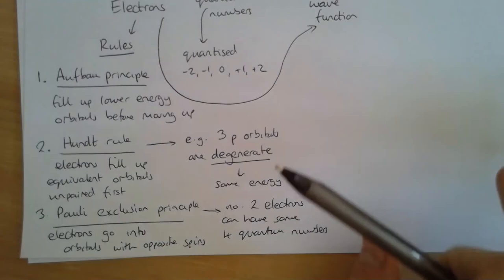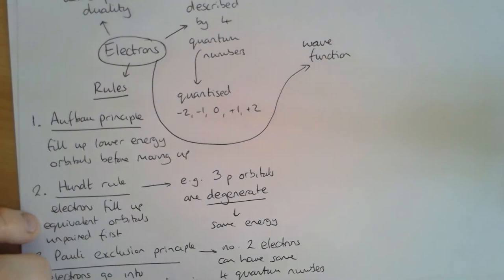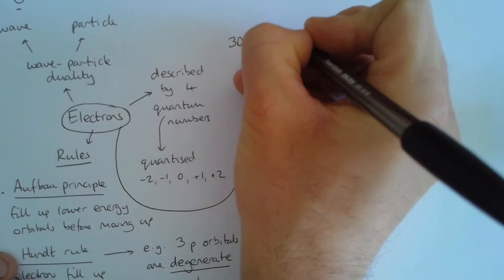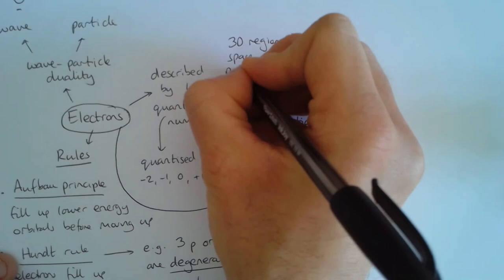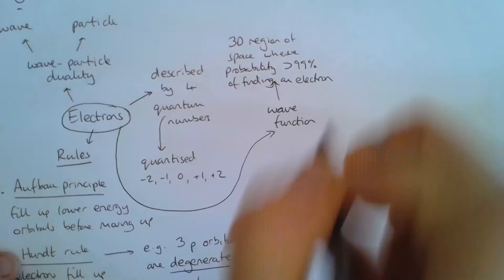Now we're going to look at what wave functions are. A wave function describes the three-dimensional region of space where there is a probability greater than 99.99% of finding an electron.